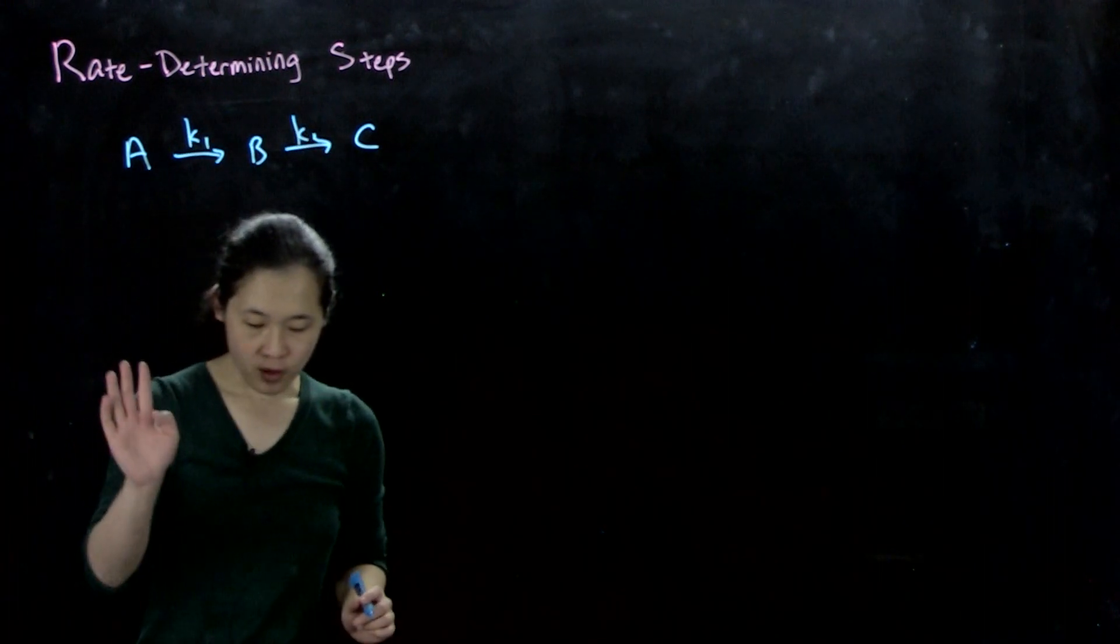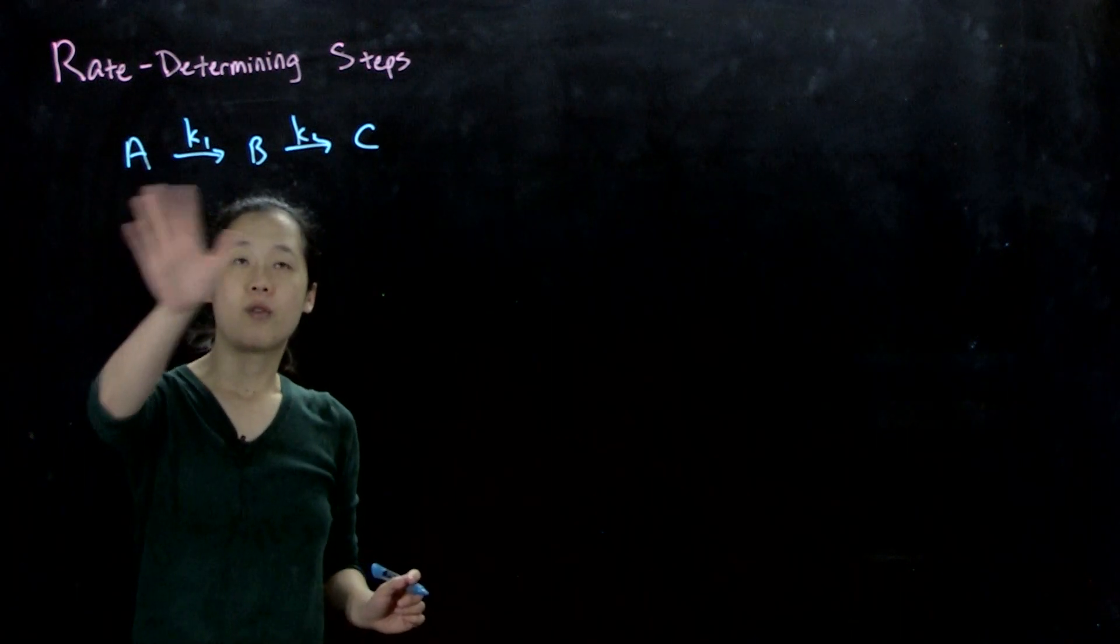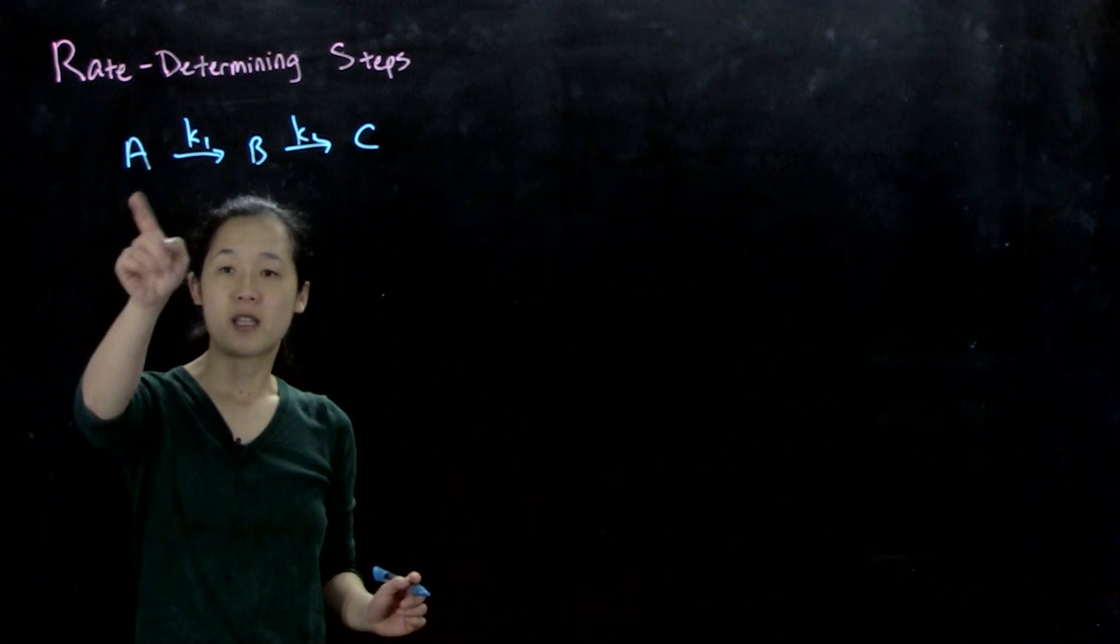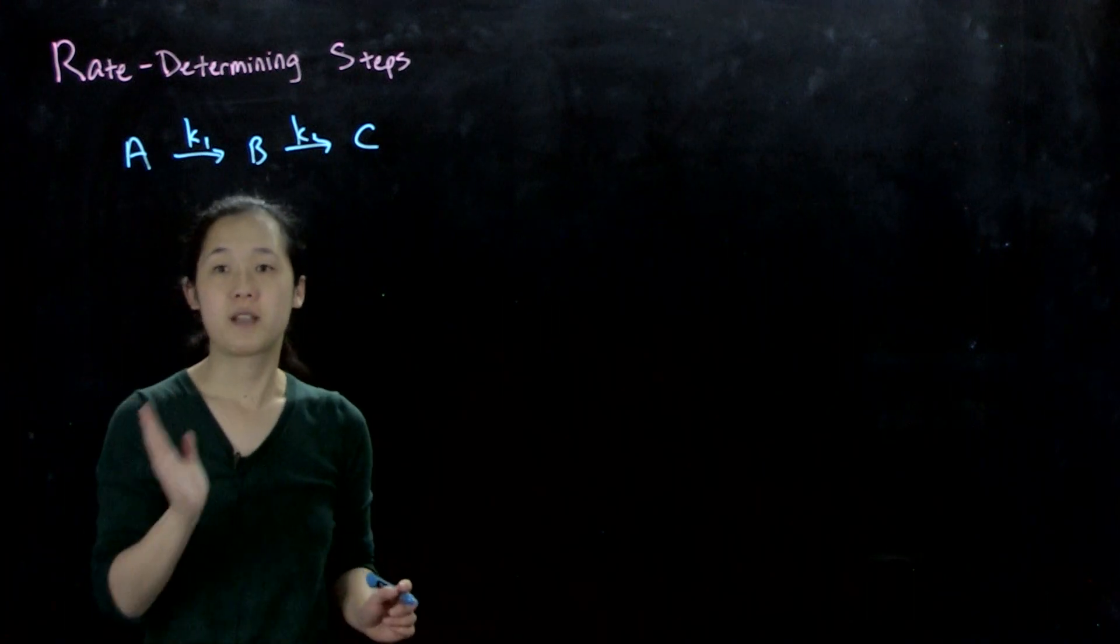So just like before, we can derive our relative overall rates with these elementary steps because we know the stoichiometry of the elementary steps.